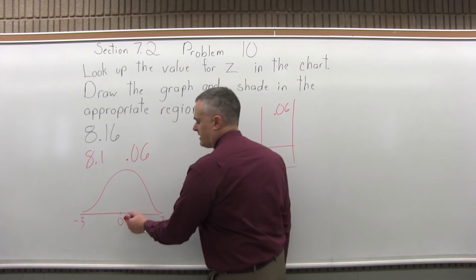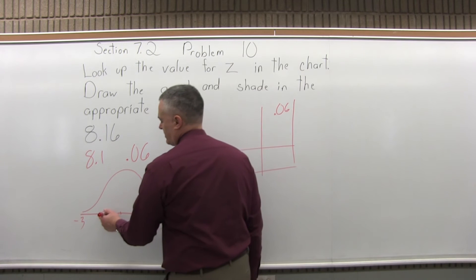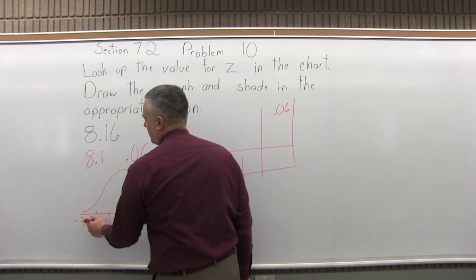And then typically we fill it in by 1, positive 1, positive 2, positive 3 on the right, negative 1, negative 2, negative 3 on the left.